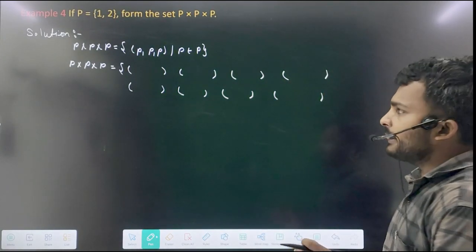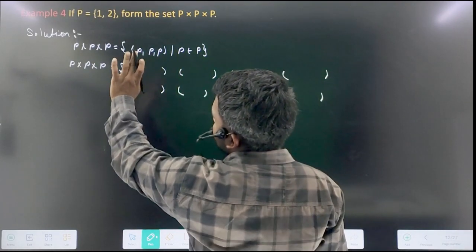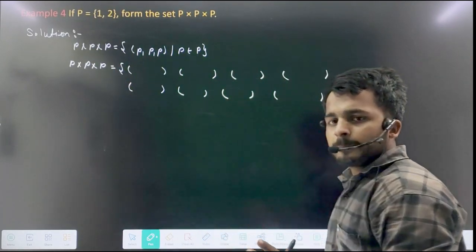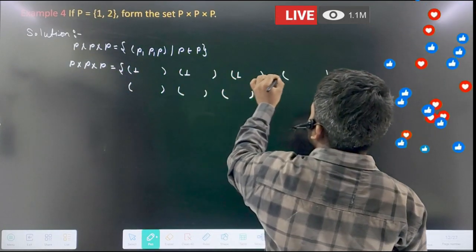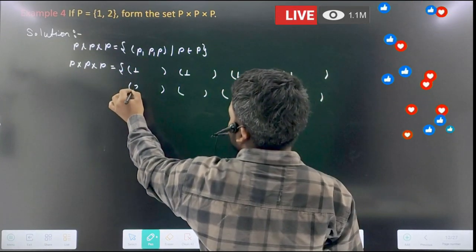We will put P here. So here, see how many elements: 1 and 2 elements, there are 2 elements. Now what do we do here? So you can see that 1 is 4 times here first, then write the other 4 times 2.